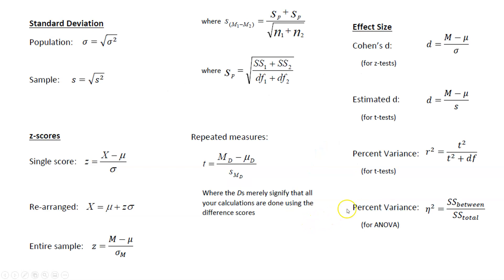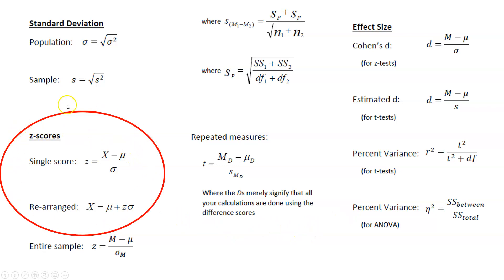Now that I've shown you those formulas, I want to highlight that they appear on your formula sheet under z-scores — the first column at the bottom of the first page. You've got the original formula to compute a single z-score, and if you algebraically rearrange it to solve for x, you can find the original score given a z-score. We will eventually get to an entire sample z-score, but that's not in this module, so just ignore that for now.